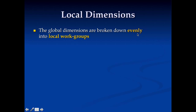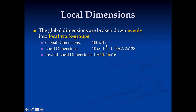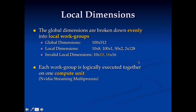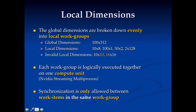We also have local dimensions, which break down the global dimension into local work groups — groups of work items or threads that run together. For example, if I have global dimensions of 100 by 512, local dimensions must divide evenly; I couldn't use 10 by 10 because 10 doesn't divide 512 evenly, or 16 by 16 because it doesn't divide 100 evenly. Each work group is logically executed together on one physical processor or compute unit, which means those threads can synchronize — but synchronization is only allowed within the same work group. If threads need to synchronize, you must ensure they're in the same local work group, making your choice of local dimensions critical.